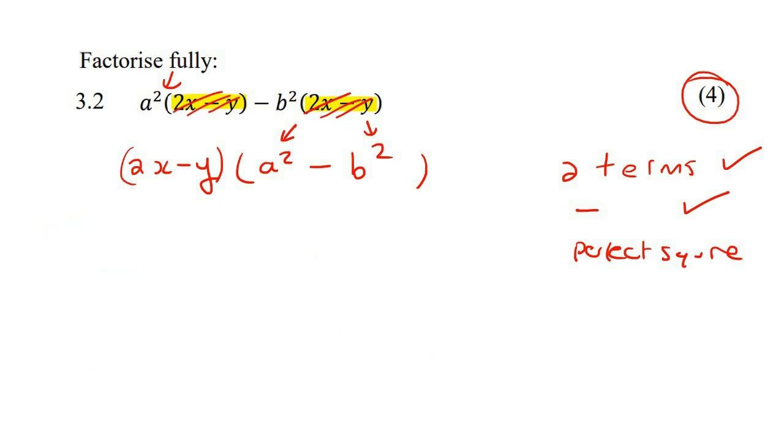So there we go. So this is a perfect square. So we make two brackets, and we'll say a minus b, and then a plus b. Remember, you always take the square root of that one, the square root of that one. That's where I got the a, and I got the b. And then you make two brackets, and one of them's a minus, one of them's a plus. And there we have it.